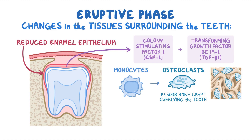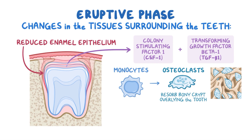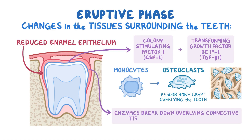Without the bony crypt, the dental follicular cells become continuous with the cells of the lamina propria of the overlying oral mucosa. The reduced enamel epithelium then goes on to secrete some enzymes that break down the overlying connective tissue, nerves, and blood vessels, forming an eruption pathway for the tooth. The lack of blood vessels and nerves helps in a relatively bloodless and painless eruption.